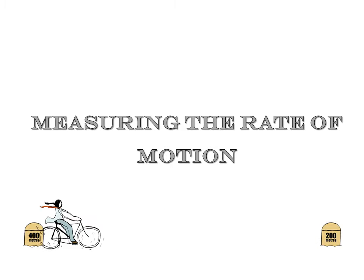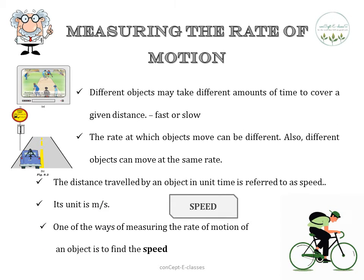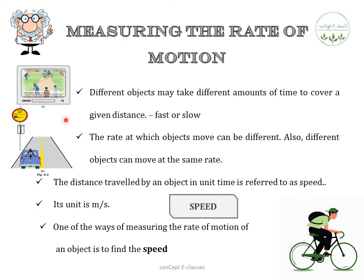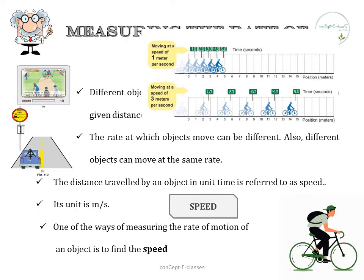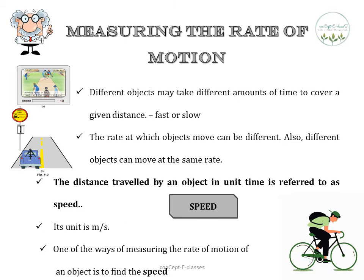Next is measuring the rate of motion. Different objects may take different amounts of time to cover a given distance. For example, the bowling speed shown here is about 143 km per hour, whereas the car speed sign shows it should be only 50 km per hour. Some objects might be fast, some might be slow, and the rate at which objects move can be different. The distance travelled by an object in unit time is referred to as speed.